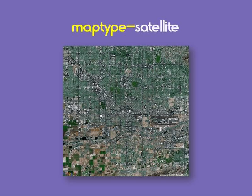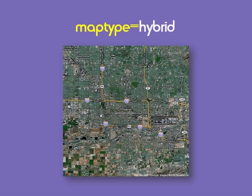If we want to generate a satellite map with labels, that's called a hybrid map, and the parameter is maptype=hybrid. This is what a hybrid map looks like — it's a satellite map with road overlays.